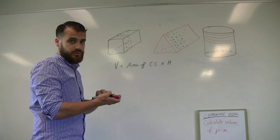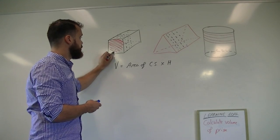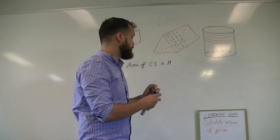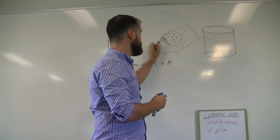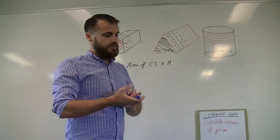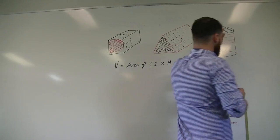So in this one, the cross section is this red patch here. In this one, the cross section is the triangle. And in this one, the cross section is the circle.